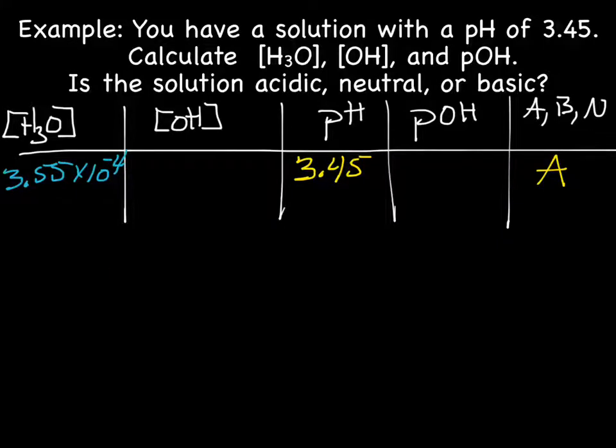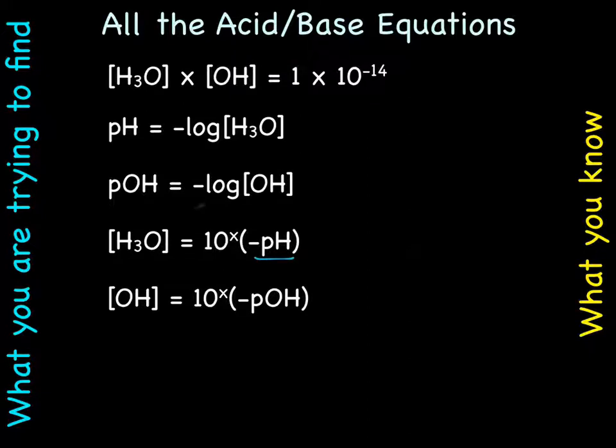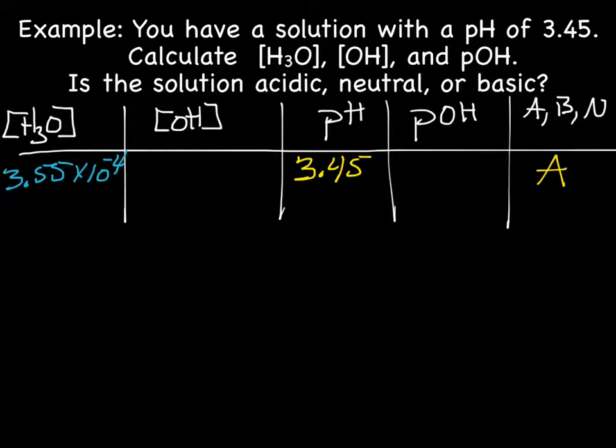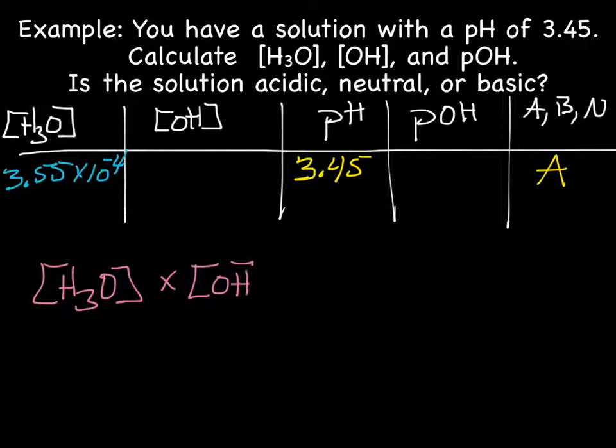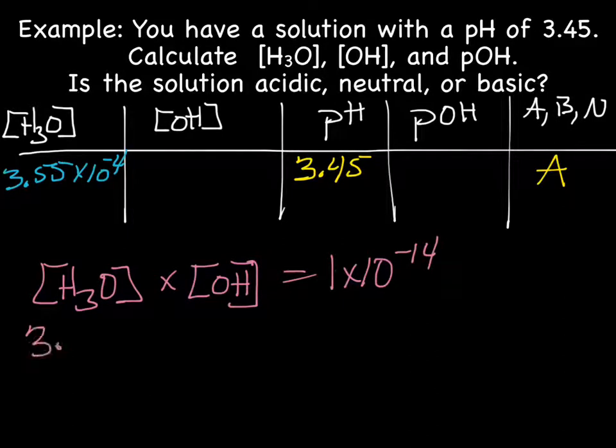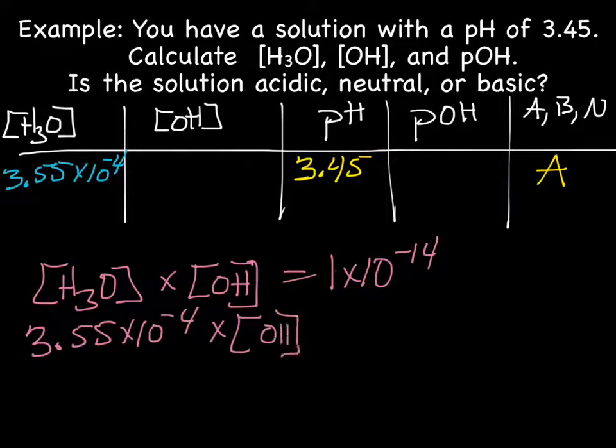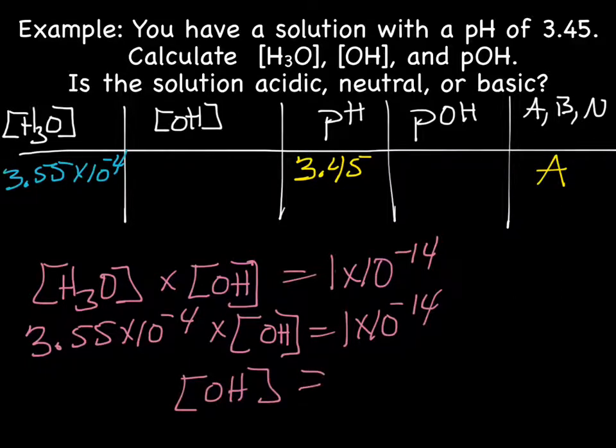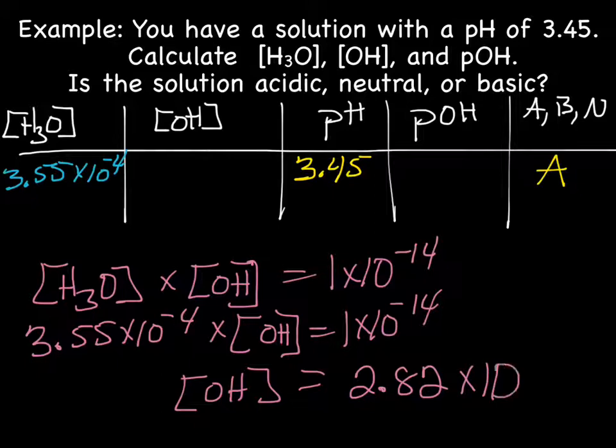So now that I know H3O, let's see. I can figure out concentration of OH. So concentration of H3O times concentration of OH equals 1 times 10 to the negative 14th. So it's going to be 3.55 times 10 to the negative 4th times the concentration of OH, which equals 1 times 10 to the negative 14th. So that gives us an OH concentration of 2.82 times 10 to the negative 11th.